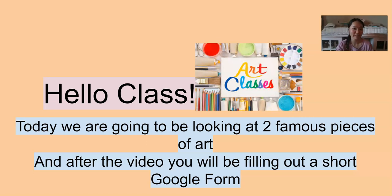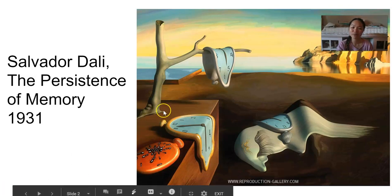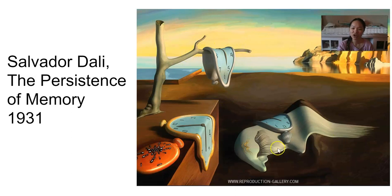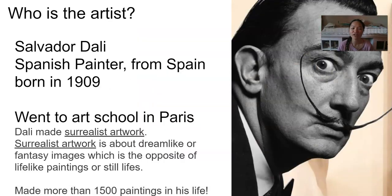Today we're going to be learning about Salvador Dalí's 'The Persistence of Memory,' made in 1931. A lot of you picked this from our assignment two. You can just take a second to notice all the parts of this painting — it looks like a pretty cool painting, right?